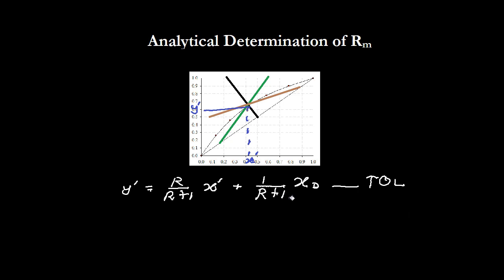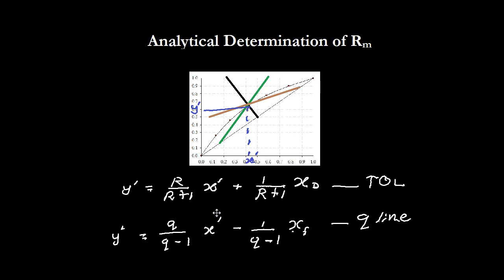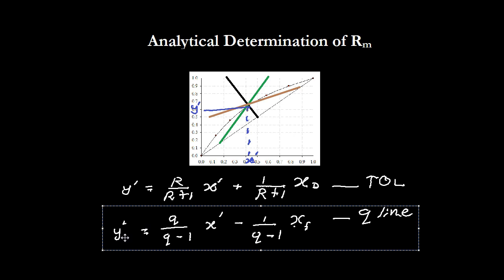In the same manner, the x-dash and y-dash coordinates also satisfy the Q line, giving us: y' = (q / (q−1)) · x' − (1 / (q−1)) · xf, where xf is the concentration of the feed. Now what we are going to do is eliminate y-dash by equating these two expressions, since both equal y-dash.